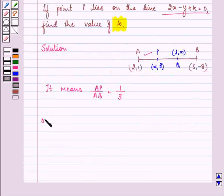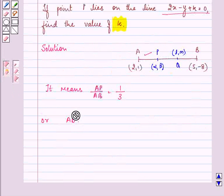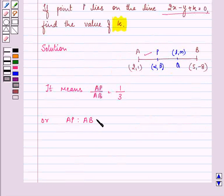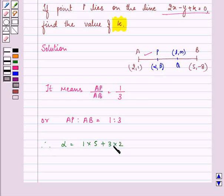Or we can write it as AP is to AB equals 1 is to 3. So this point alpha is equal to 1 into 5 plus 3 into 2 upon 1 plus 3.